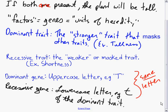We use the same letter, so if our trait that we're looking at is height, then we would use capital T for tallness since it is the dominant trait, and a lowercase t for shortness since it is the recessive trait.